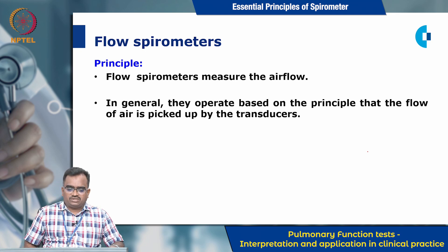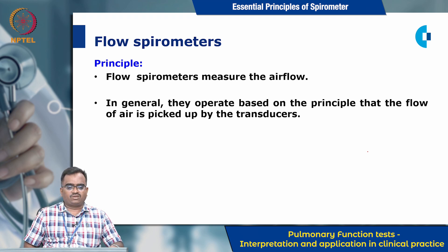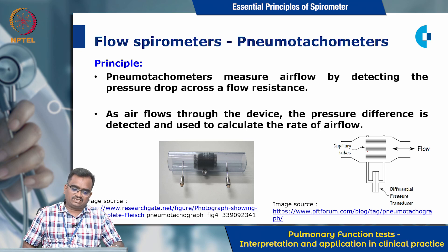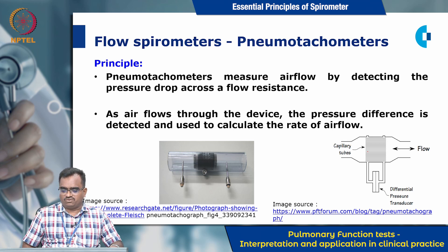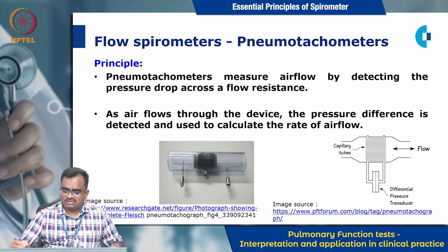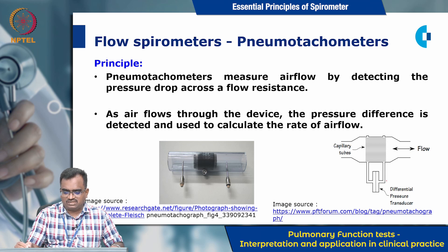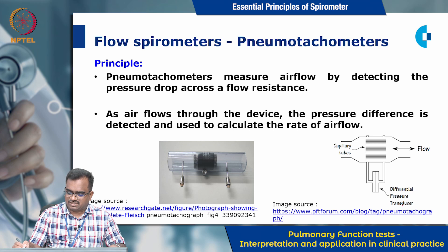Flow spirometers measure airflow. In general, they operate based on the principle that the flow of air is picked up by transducers. An example of a flow spirometer is the pneumotachometer, which measures airflow by detecting the pressure drop across the flow resistance. As air flows through the device, the pressure difference is detected by differential pressure transducers and used to calculate the rate of airflow.